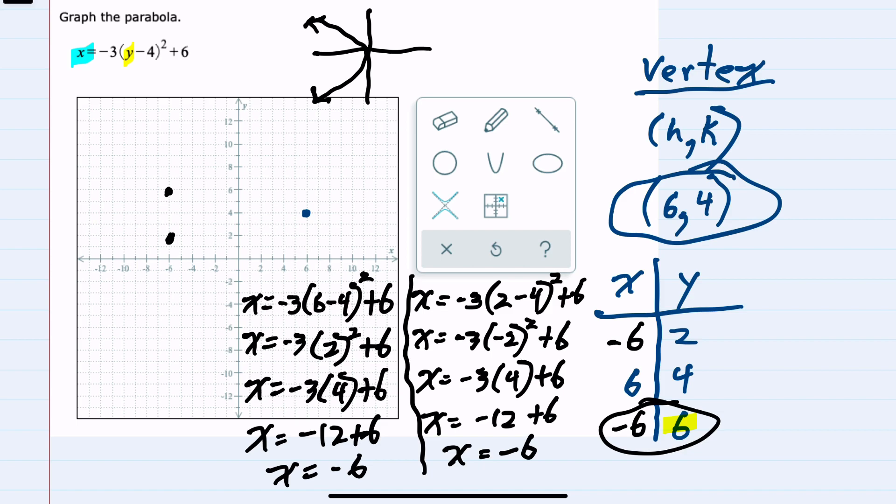We can now see that the shape of our parabola is a more narrow left opening parabola with the vertex of 6, 4.